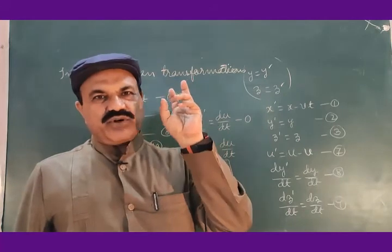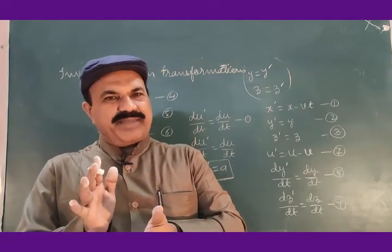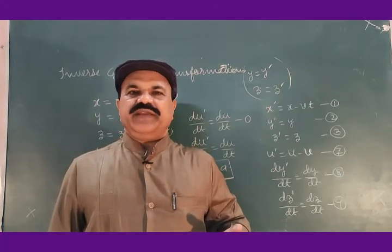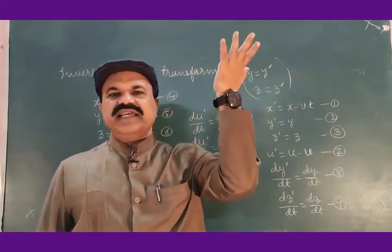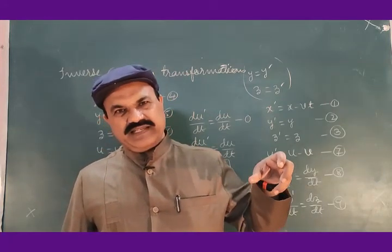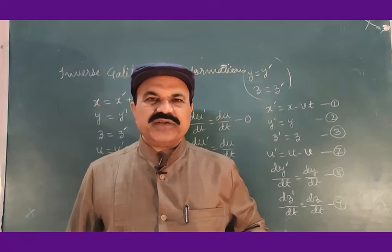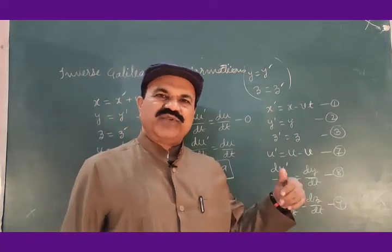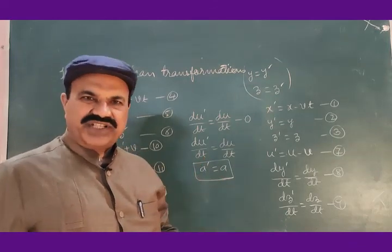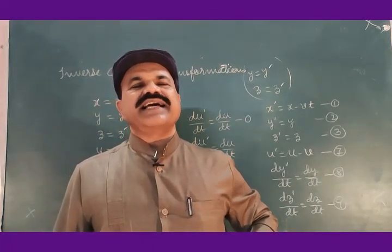To summarize: we started with two coordinate systems initially coinciding. At t equal to 0, the second system started moving along the positive x direction with uniform velocity V. Using the geometry of the two frames, we derived the Galilean transformation equations, inverse Galilean transformation equations for position coordinates, then for velocity coordinates, and finally showed that acceleration is the same in both inertial frames. This is about Galilean transformations. Thank you.